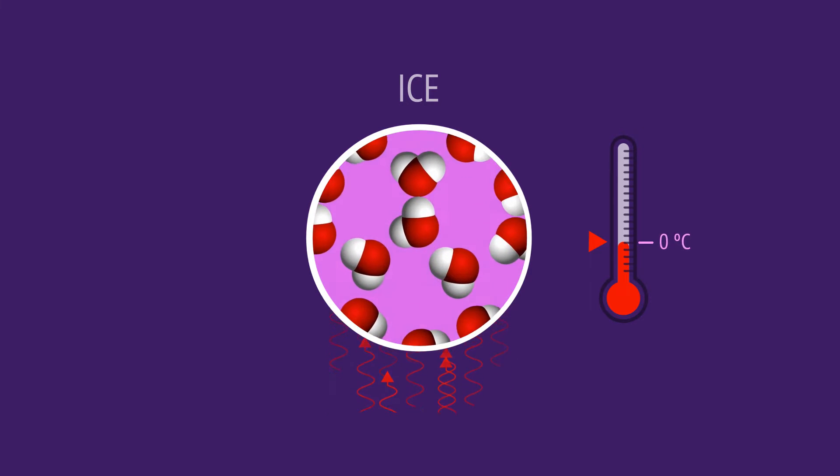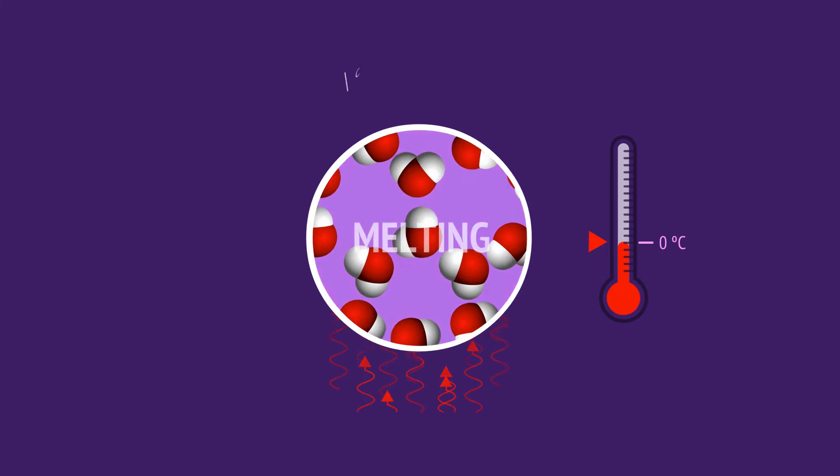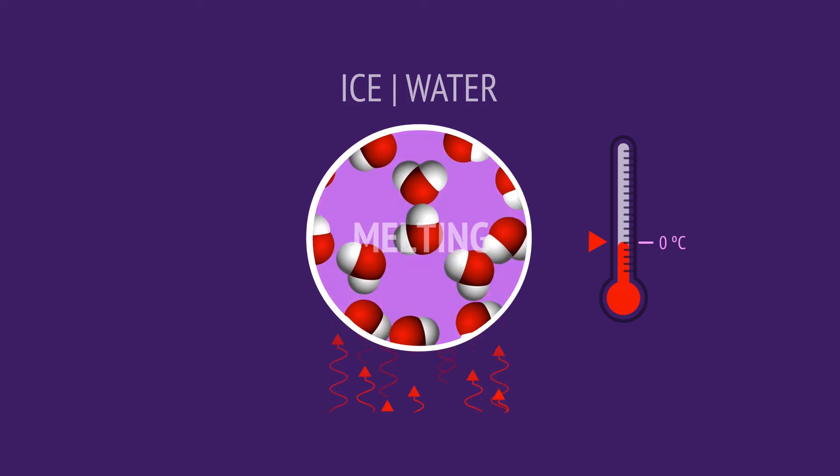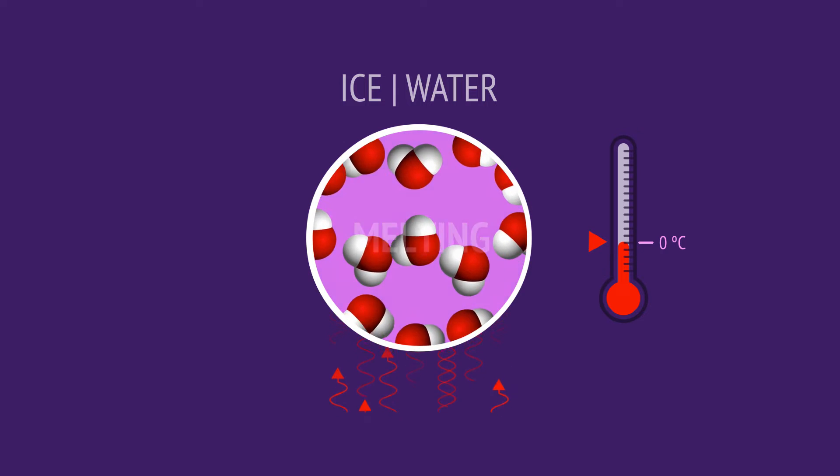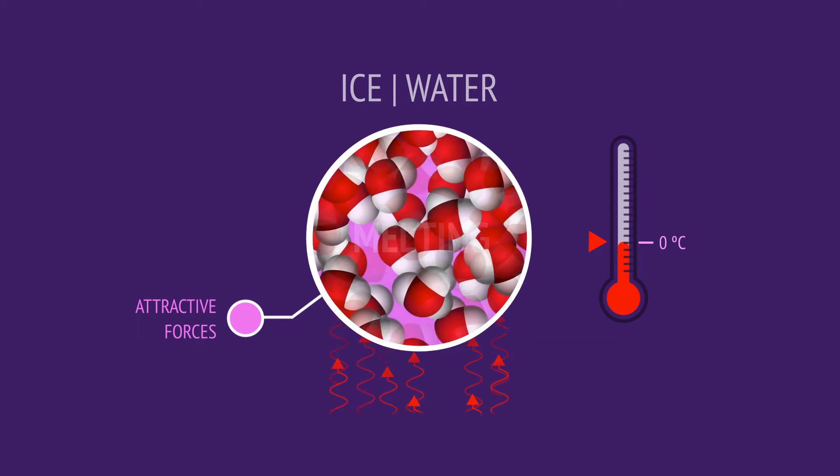At zero degrees Celsius, the ice melts as the molecules have enough energy to break free from the solid structure and enter the liquid state. During melting, the temperature remains constant because the heat is used to overcome the hydrogen bonds instead of speeding up the molecules.